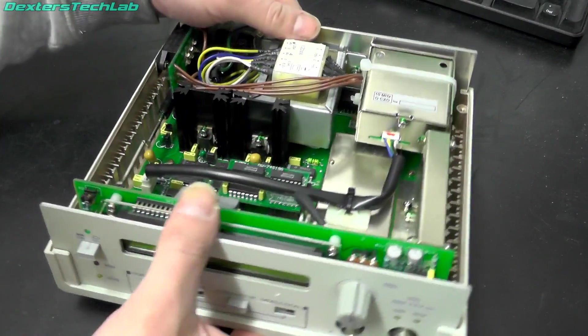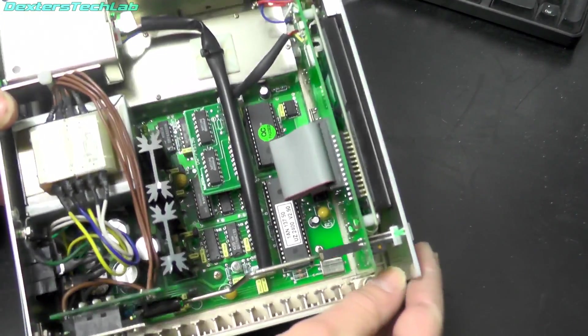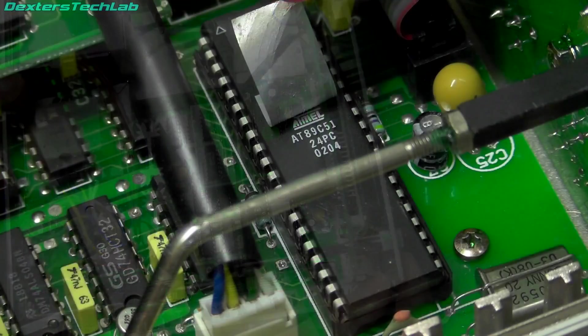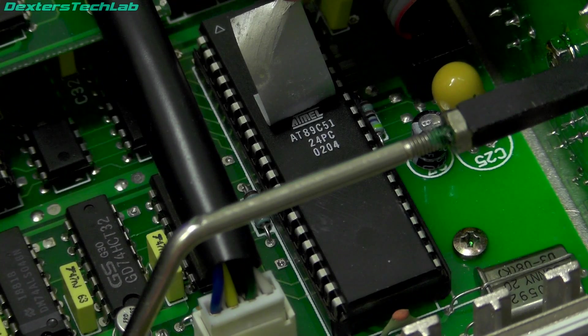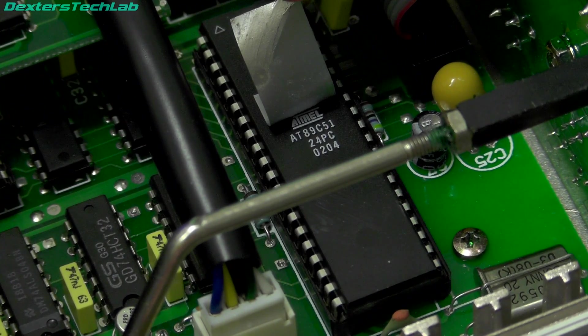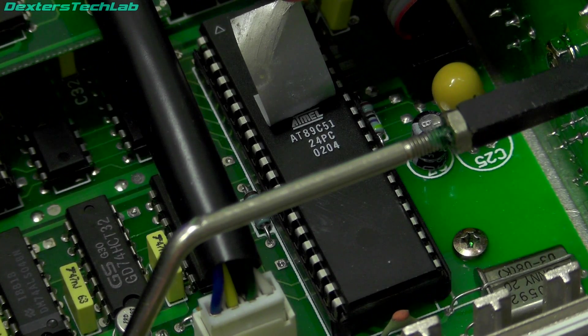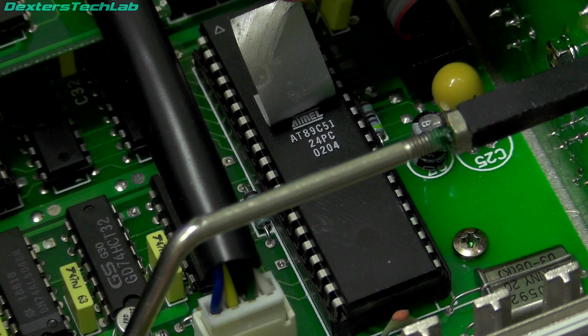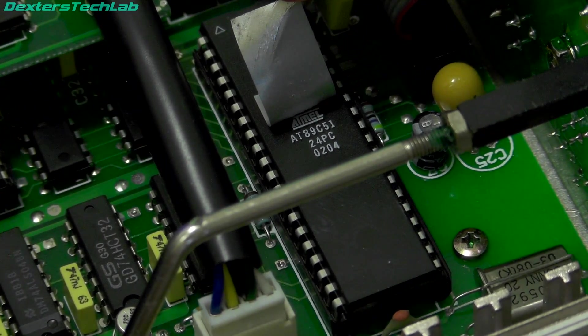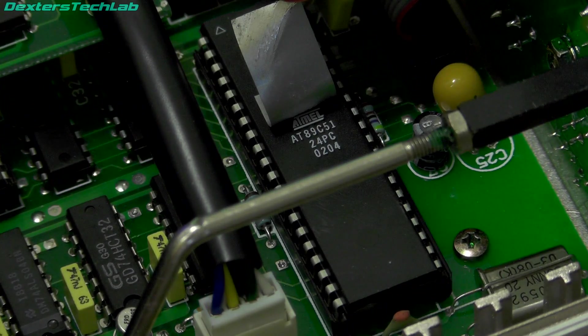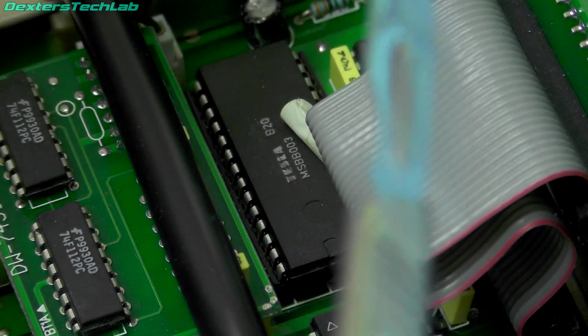Before we turn this on I thought it might be a nice idea just to have a quick look at that CPU that's down in there and see exactly what that is. So the device we have in here is an Atmel 8089C51 which is an 8 bit microcontroller with 4K of Flash ROM, 128 bytes of internal RAM, 32 programmable lines blah blah blah. It's a little 8 bit microcontroller running the show.